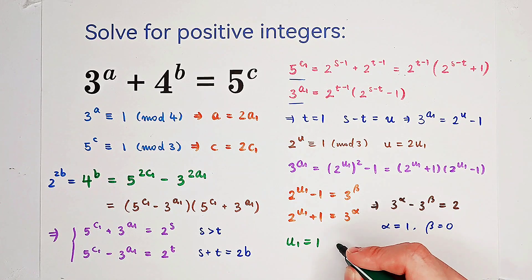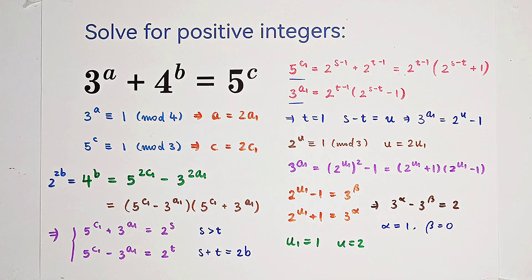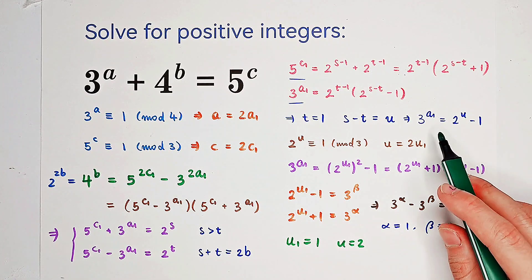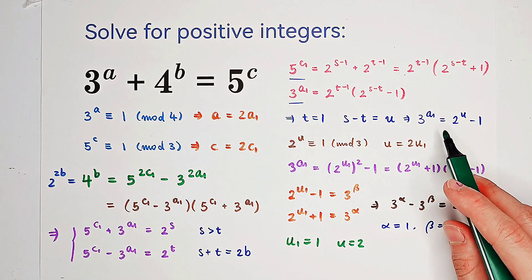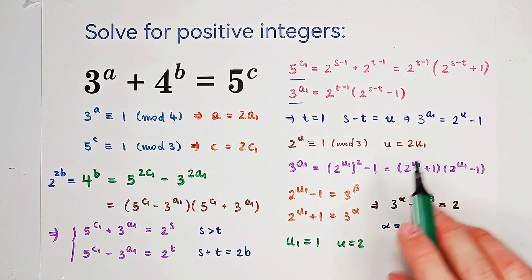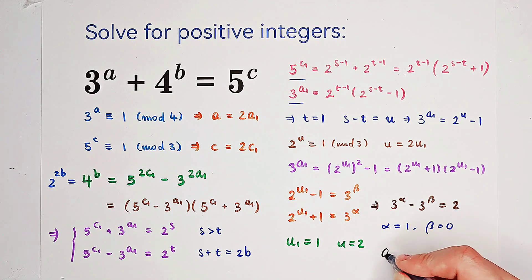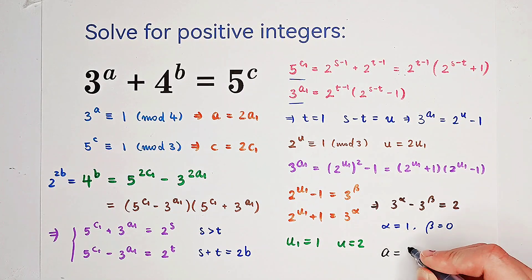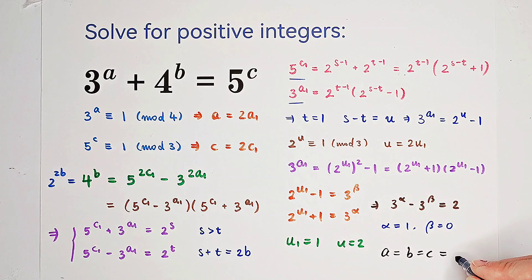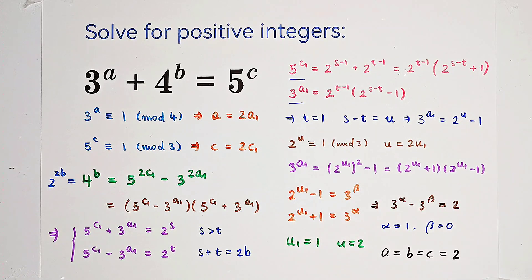Therefore u equals 2, which means a1 equals 1 and a equals 2. From this we can find all values: a equals b equals c equals 2.